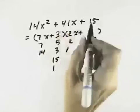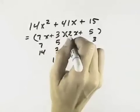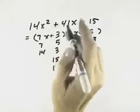Let's try the 3 with the 5. Well, 7 times 5 is 35. 3 times 2 is 6. 35 and 6 is 41.